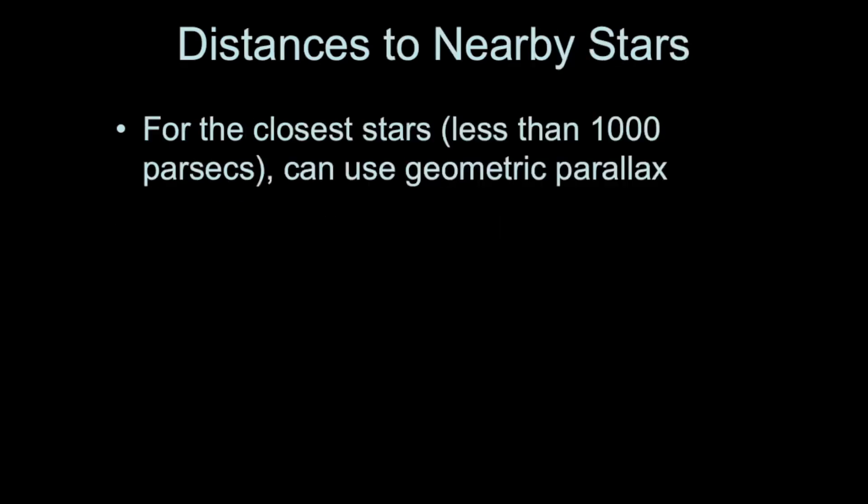To get the distances to nearby stars, we use geometric parallax, in which an astronomer can measure the parallax angle of a nearby star against the background of faraway stars. This geometric technique is quite accurate. We can determine the distances to stars out to about a thousand parsecs, which is roughly three thousand light years.